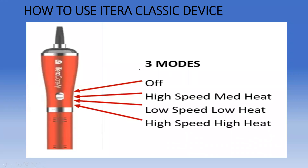How do you use the iTeraCare device? There are three modes on the Classic. We have high speed, medium heat — that's what you'll use for the majority of treatments. We have low speed, low heat, usually used for the face or for babies. And then we have high speed, high heat. When treating, you can use high speed, high heat for about 10 minutes and then go back to high speed, medium heat. Not many people can tolerate the high heat, so don't use it too long or you may burn your clients.